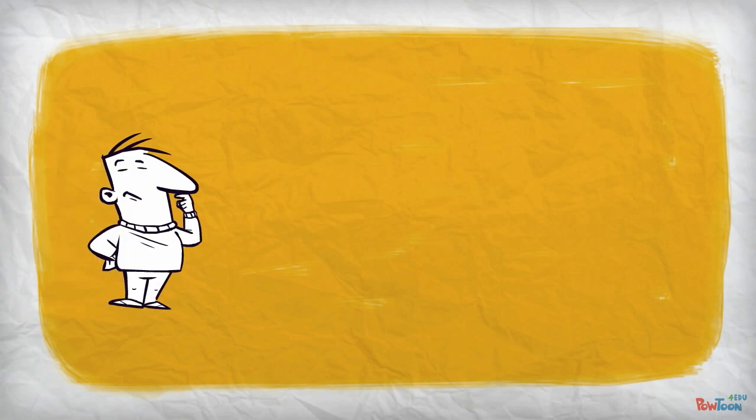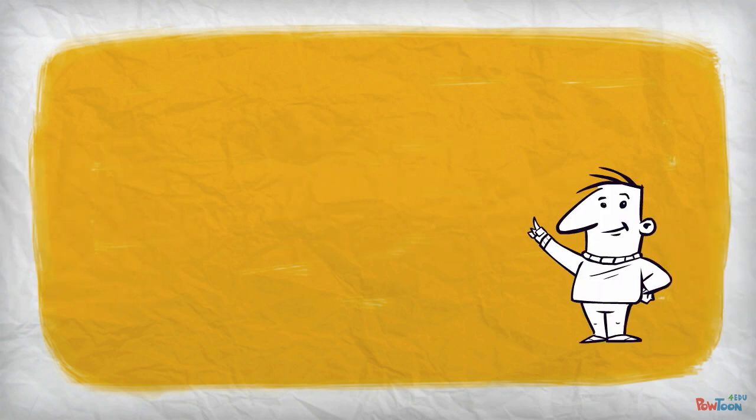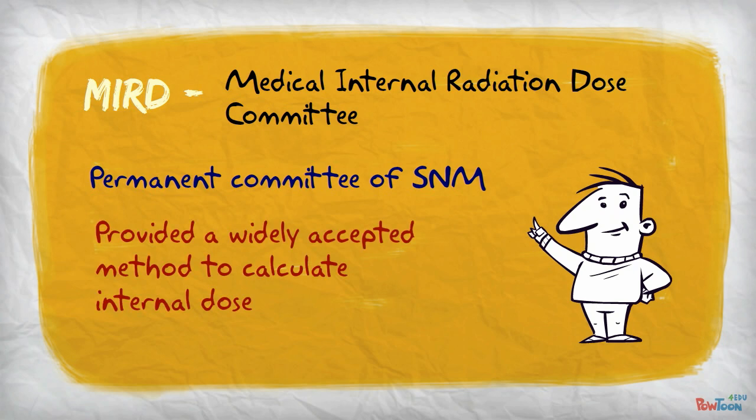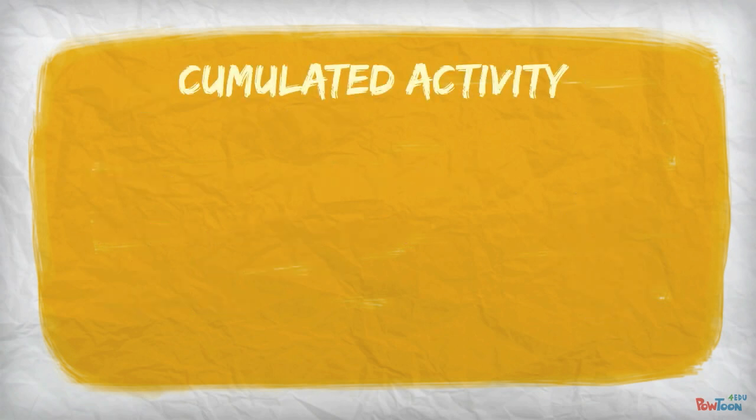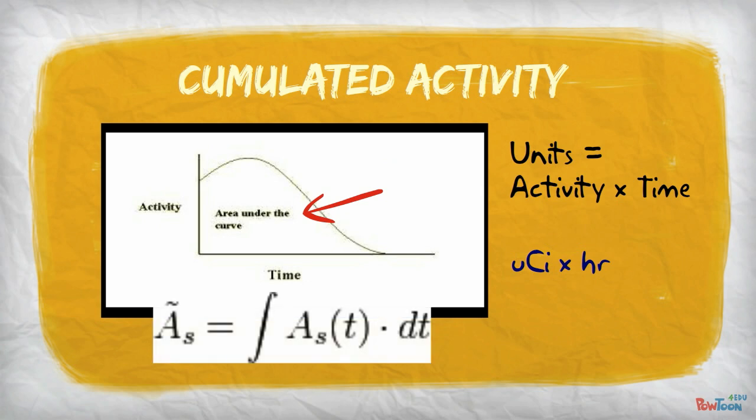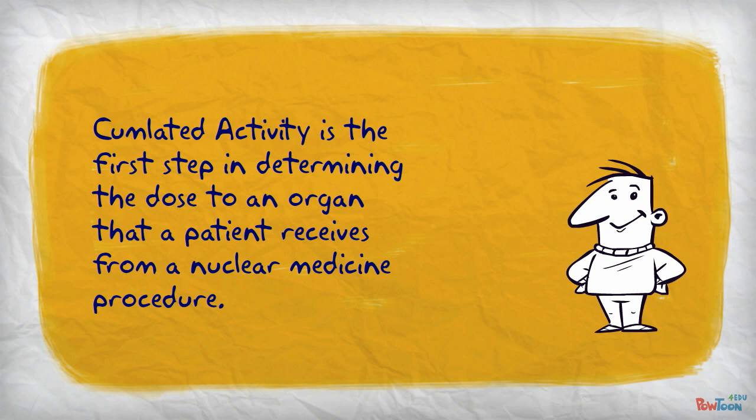Now you may ask, with all these factors to consider, how can we ever calculate an accurate dose to an organ? The MIRD, or Medical Internal Radiation Dose Committee, which is a permanent committee of the Society of Nuclear Medicine, has provided a widely accepted method to calculate internal dose. The first factor in this calculation is accumulated activity. When we plot the radioactivity versus time on a graph, accumulated activity is the area under the curve. Its unit is activity times time. For example, microcurie hours. Here is the mathematical representation of accumulated activity. It is important to understand that accumulated activity is the first step in determining the dose to an organ that a patient receives from a nuclear medicine procedure.